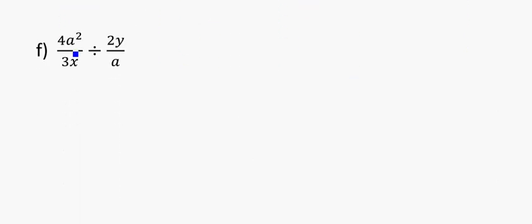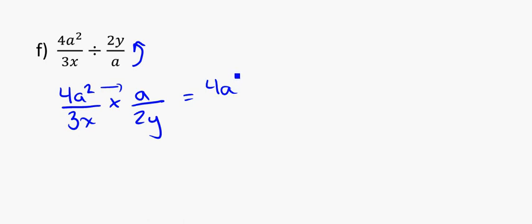One last example. Same idea. We'll write out the first one just as it is. We'll times it by the flip of the second one, so a over 2y. And now we time straight across. So 4a squared times a is going to be equal to 4a to the power of 3.